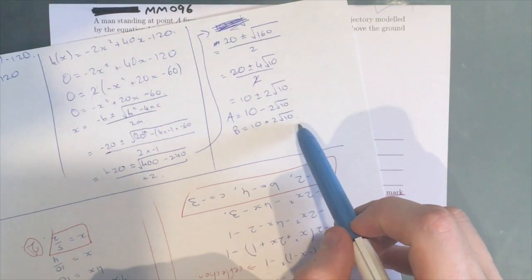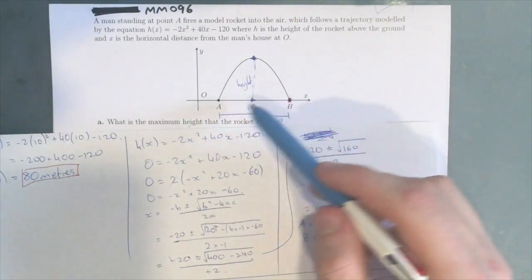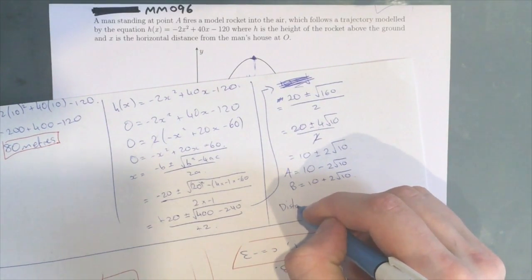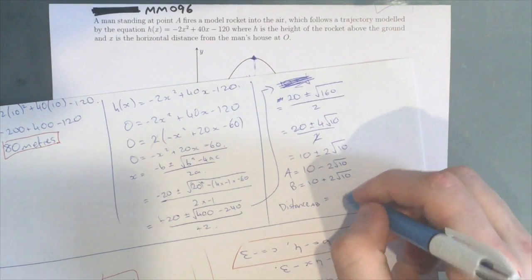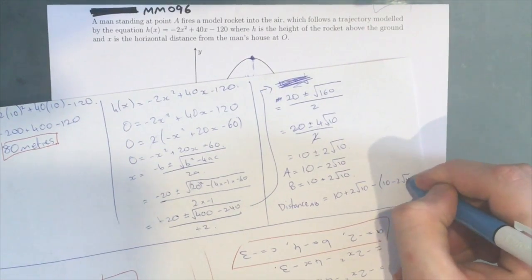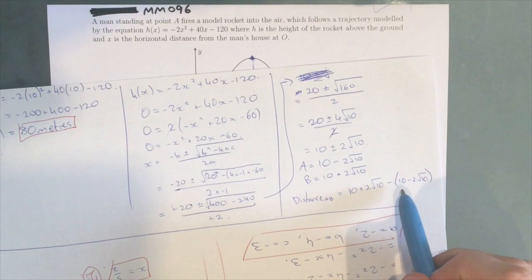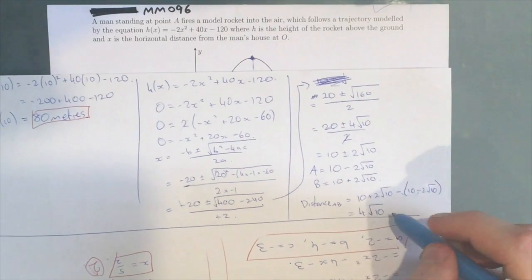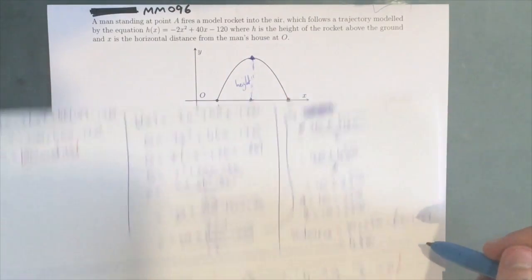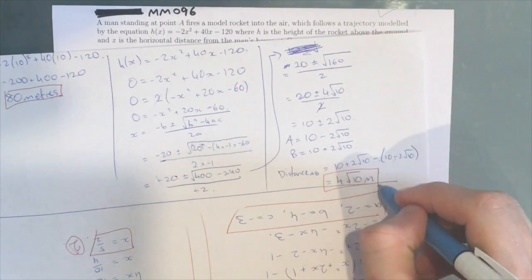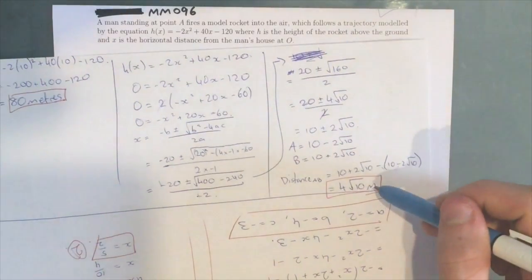So we know that B is 10 + 2√10, we know that A is 10 - 2√10. So to find the distance between the two, we minus A off B. So the distance from A to B = 10 + 2√10 - (10 - 2√10). 10 - 10 cancels out to 0. 2√10 plus, so these two negatives make a plus, 2√10 + 2√10 = 4√10. And that is not simplifiable anymore. So that equals 4√10 meters, which is our final answer. And you should never simplify this unless it asks for decimal places.